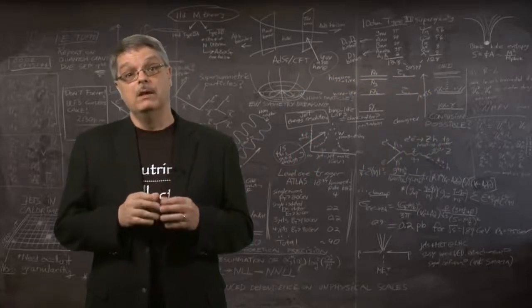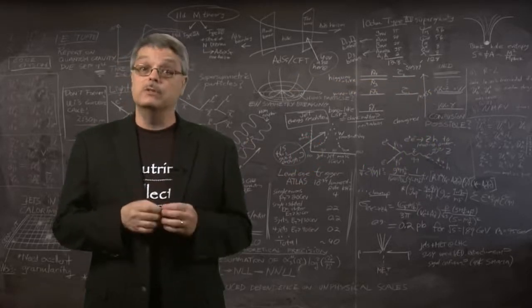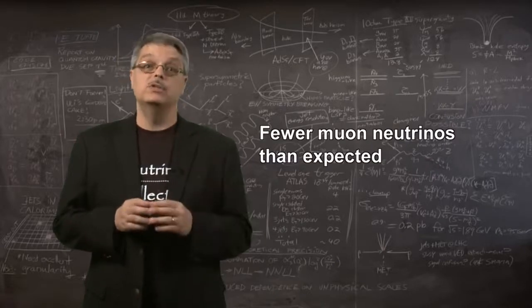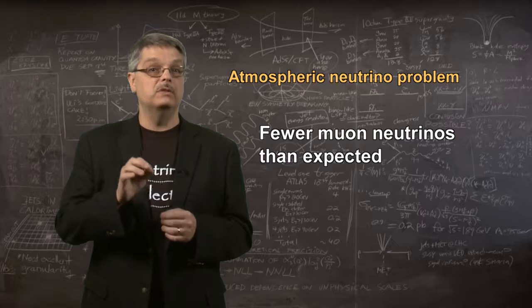So what was measured? Well, different experiments observed different results, but it was generally true that there were fewer muon-neutrinos than expected. Another mystery had appeared. This one called the atmospheric neutrino problem.